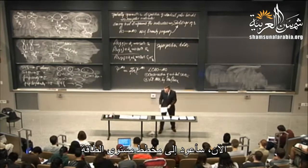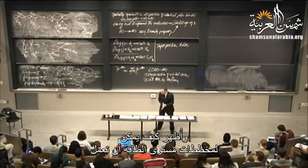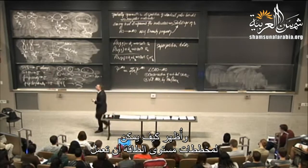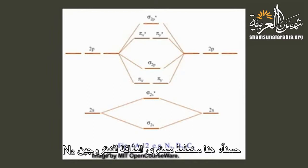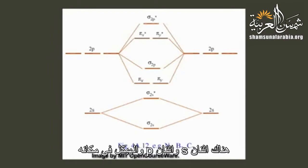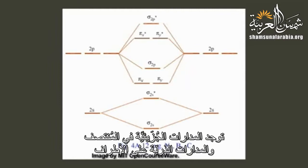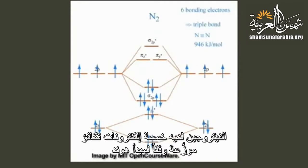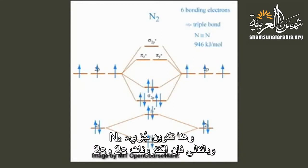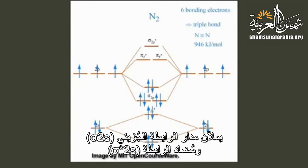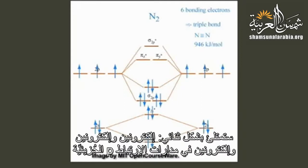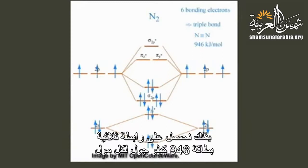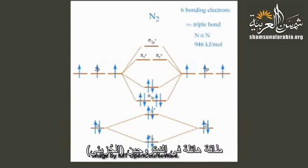Here is the energy level diagram for N2. The 2s and 2p atomic orbitals of each nitrogen split into molecular orbitals. Nitrogen has five electrons — filling by Hund's rule. The sigma 2s bonding and antibonding are filled. Then for the 2p-derived orbitals, all three bonding orbitals — sigma 2p and two pi 2p — are fully occupied, giving three bonding pairs and zero antibonding electrons: a triple bond with a bond energy of 946 kilojoules per mole — an enormous energy.